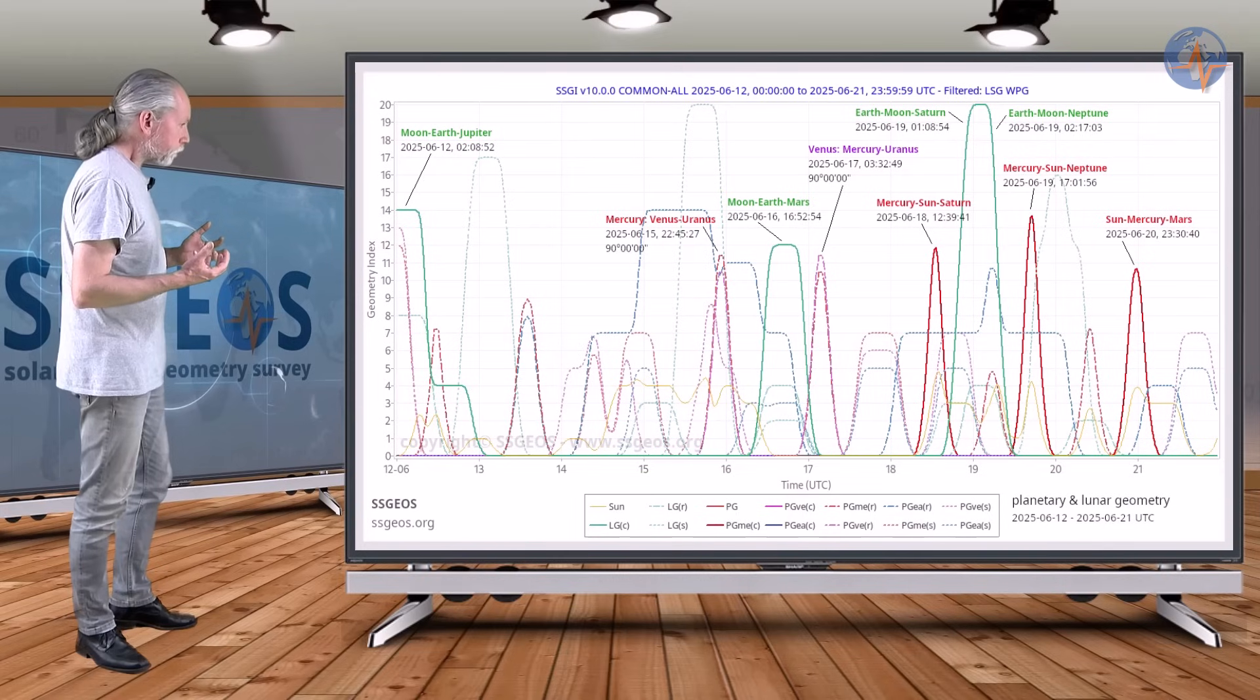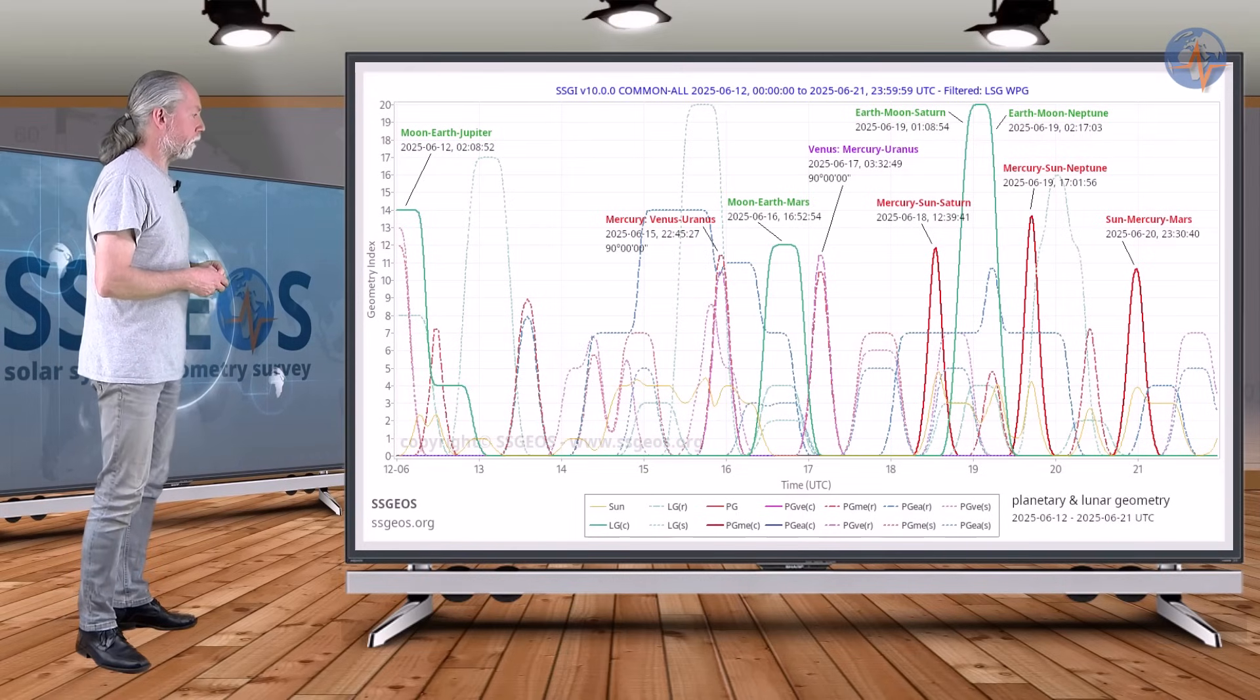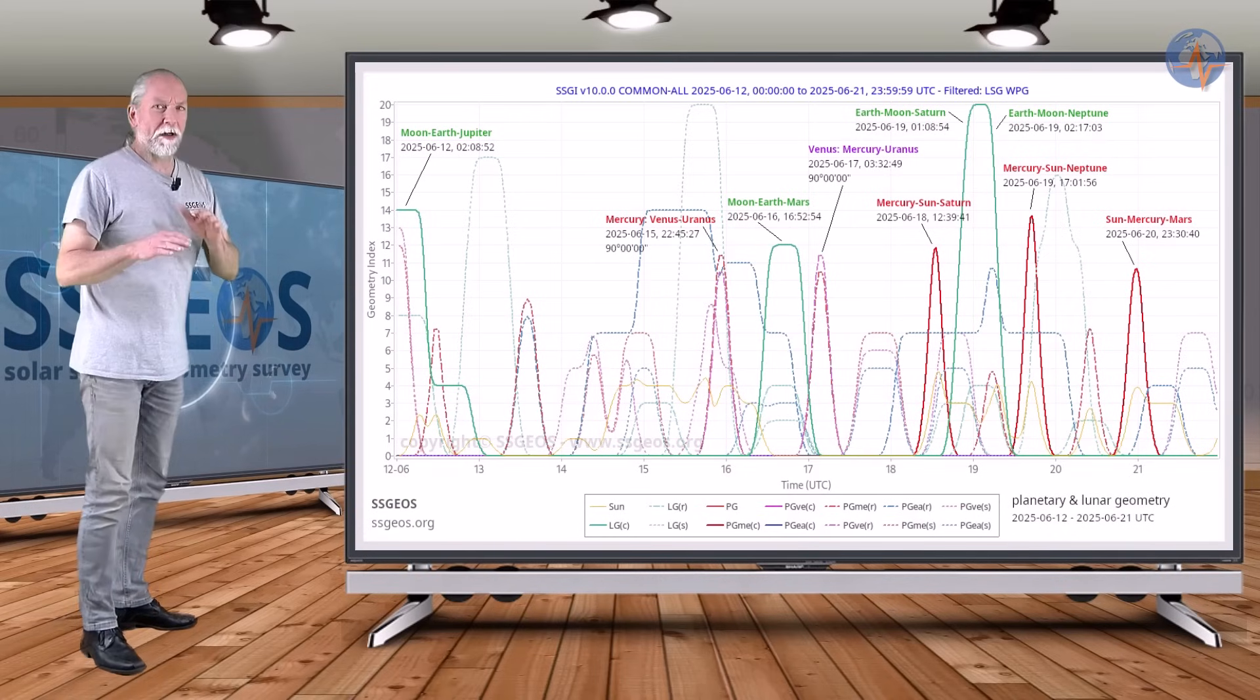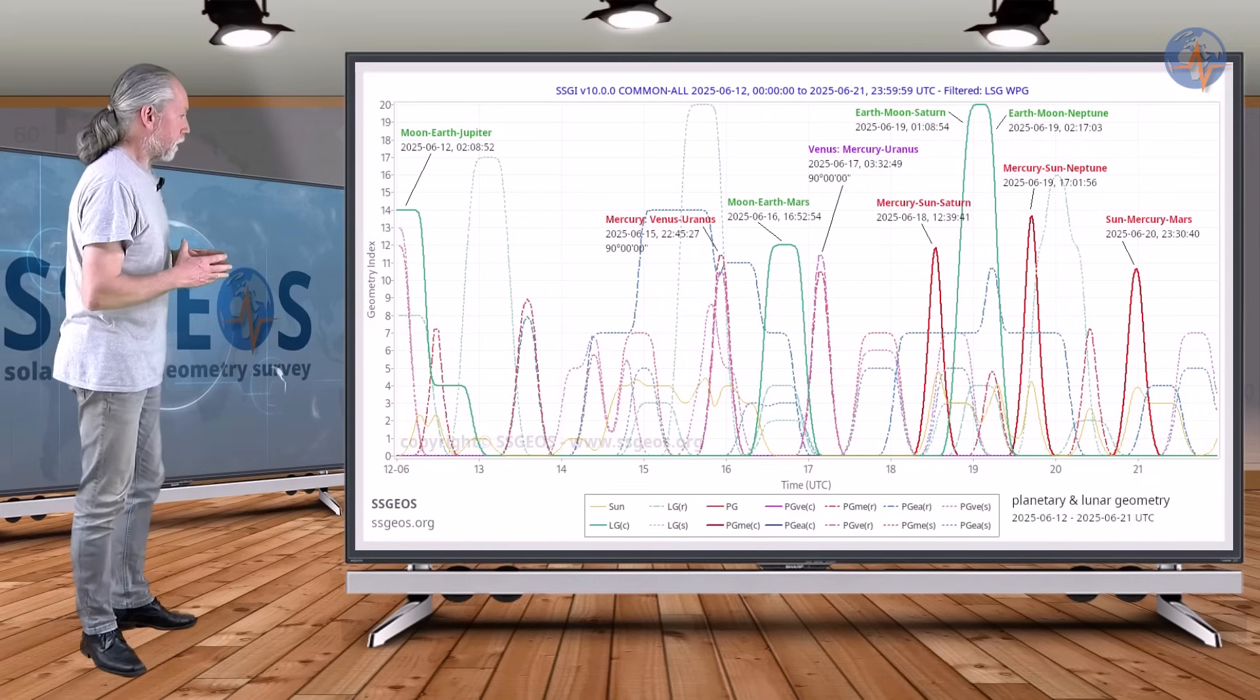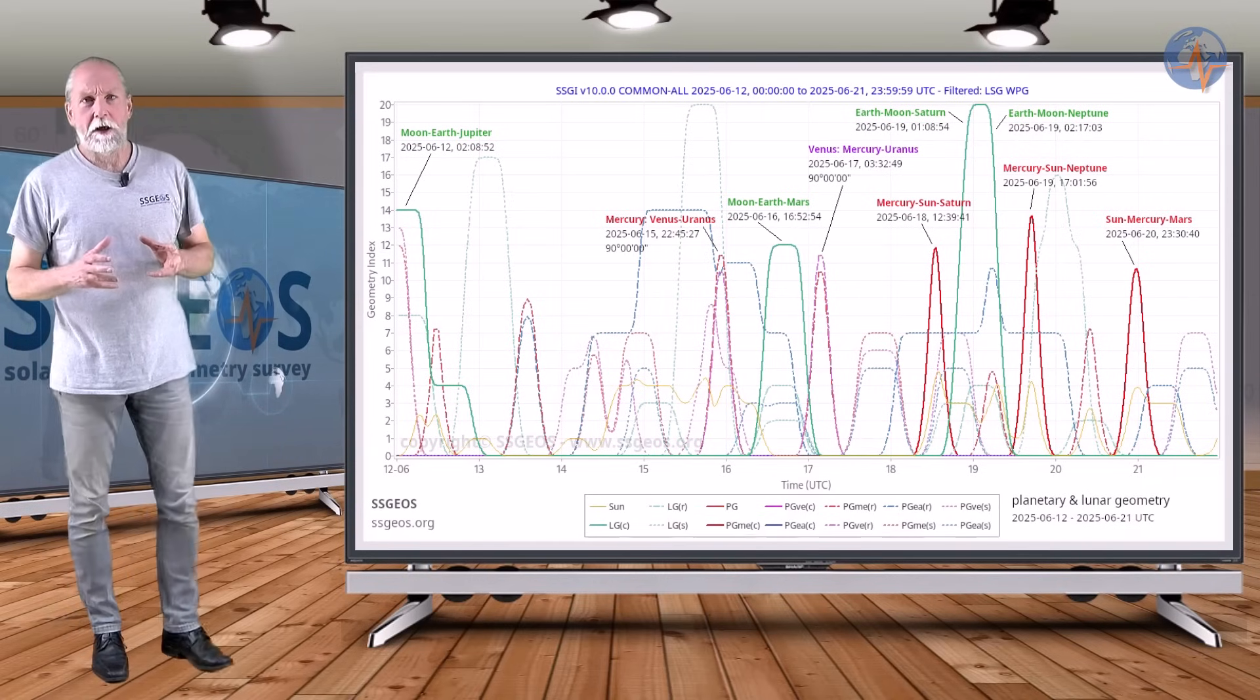We also have this right angle with Venus, Mercury and Uranus on the 17th, so there's a bit of an overlap there. I'd say 19th, 20th, and 21st, that covers the critical time frame relative to the critical planetary and lunar geometry both on the 17th and also on the 18th and 19th.